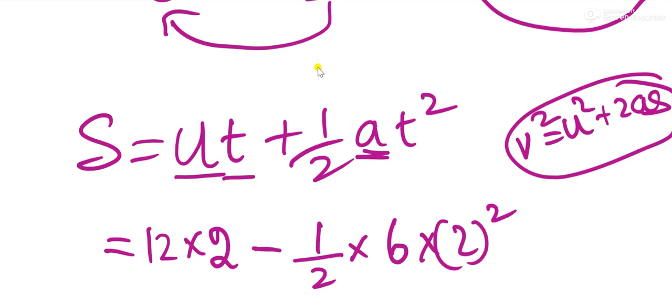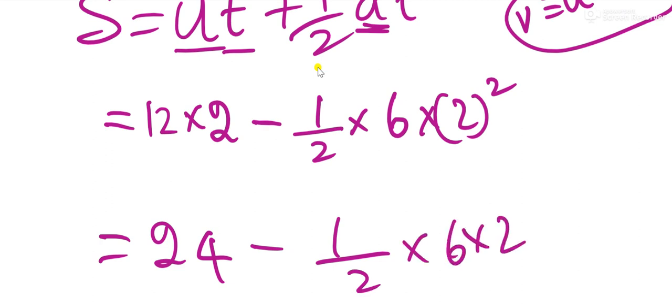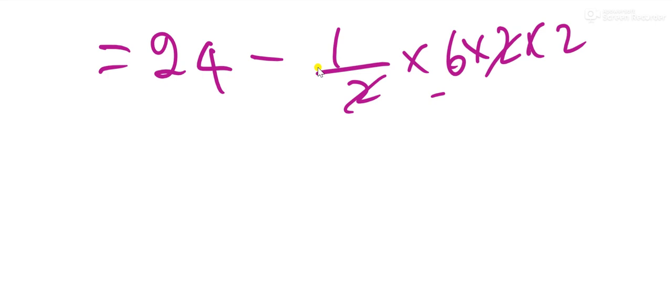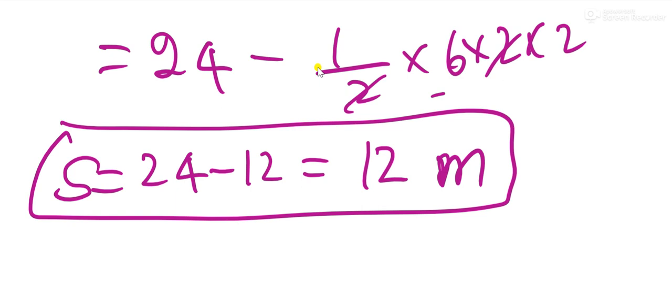So this is going to be 24, this is going to be half times 6 times 2 squared, so this cancels, it is going to be 24 minus 12. The answer is 12 meters. The displacement covered by the car is 12 meters, and the object becomes stopped finally.